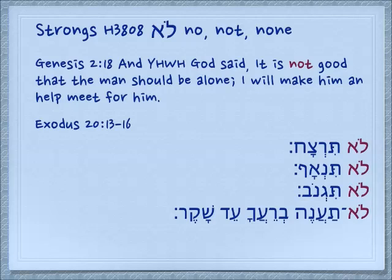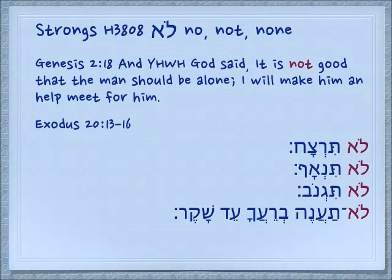If we look in Exodus 20, in the midst of the Ten Commandments — or the Ten Sayings — looking at Commandments 6, 7, 8, and 9, we see it says lo tirzach, do not murder; lo tirzach, do not commit adultery. These are permanent commandments.